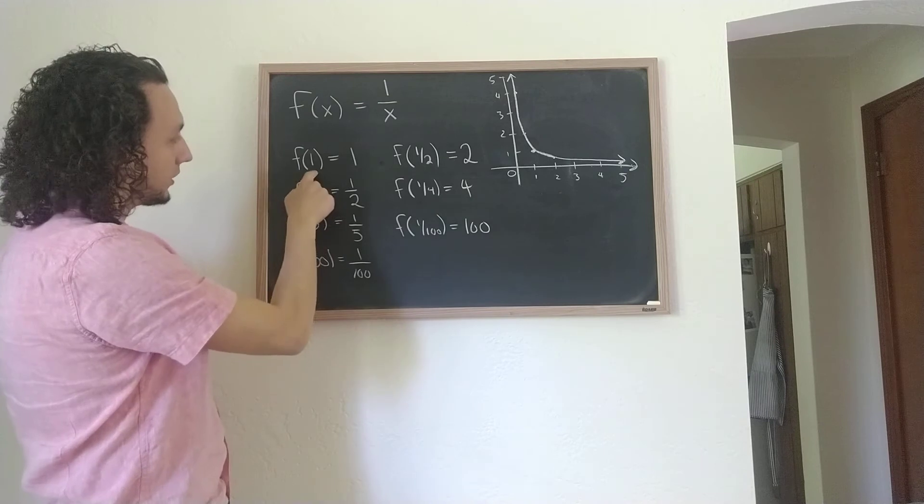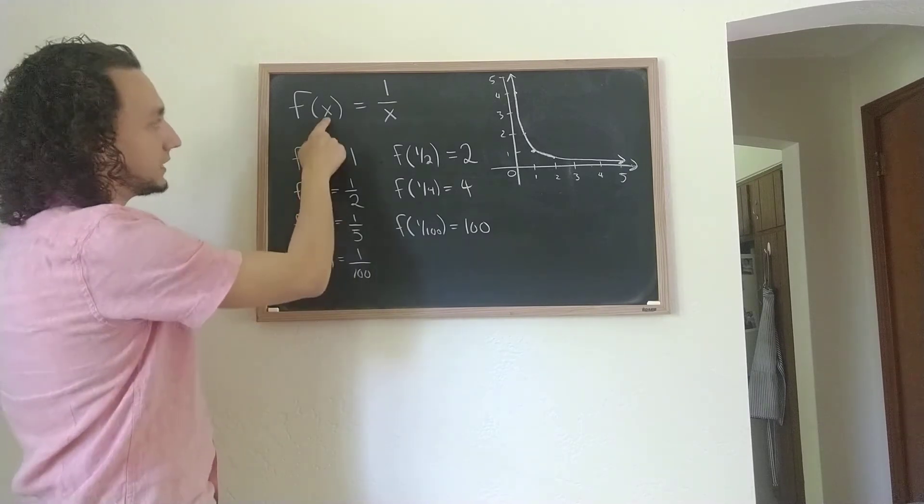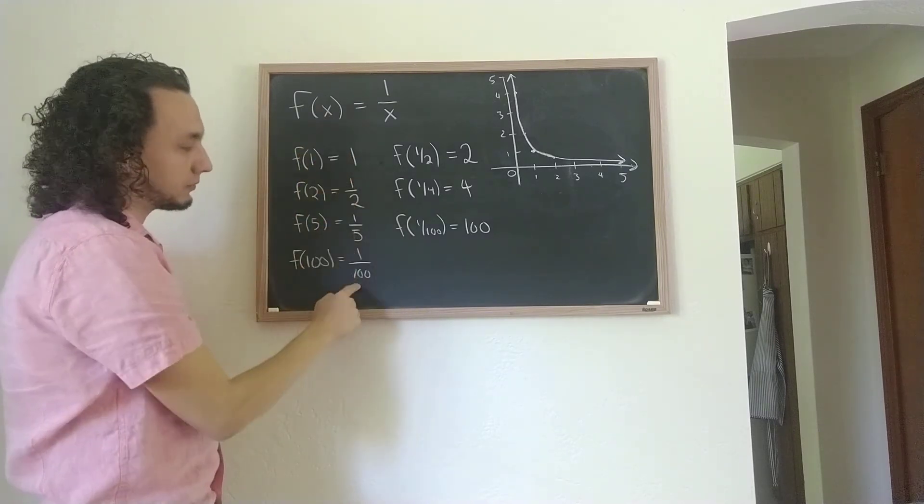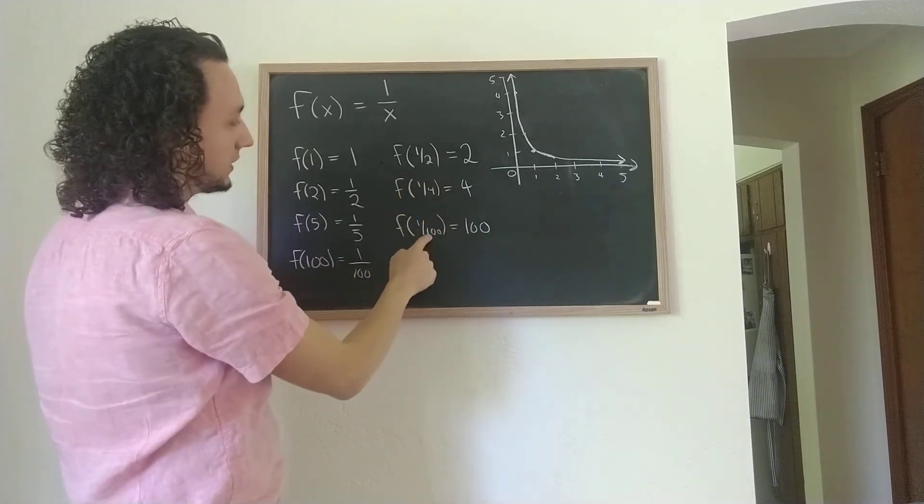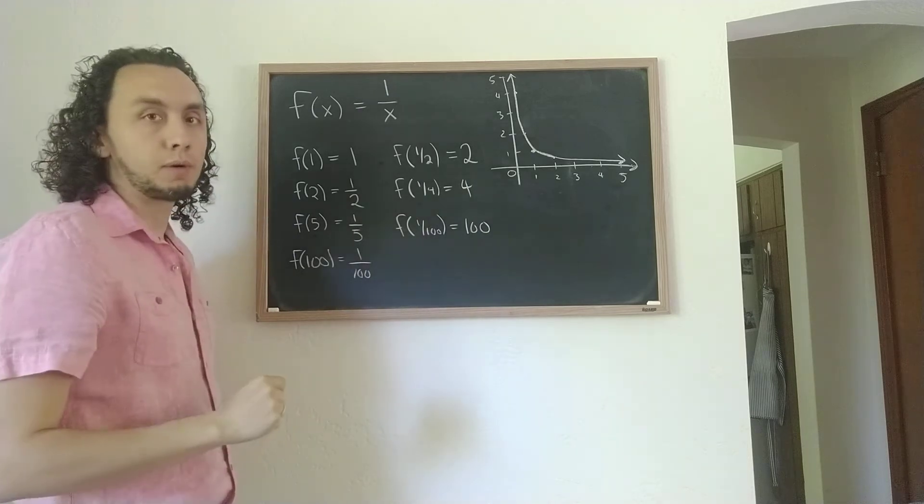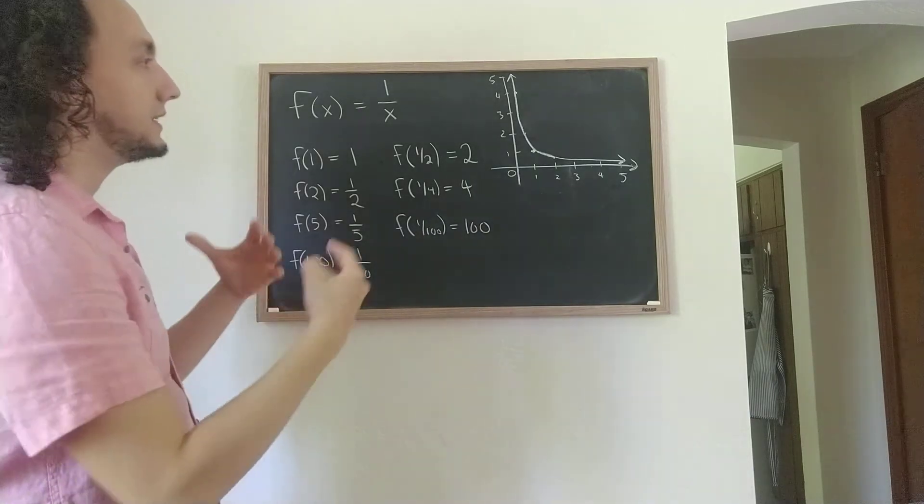We can see that as we put larger and larger values into the input, we get smaller and smaller values in the output. And as we put smaller and smaller values in the input, we get larger and larger values in the output.